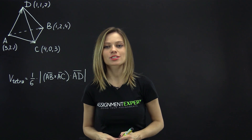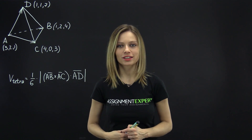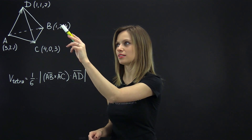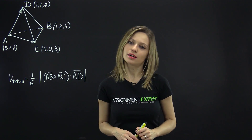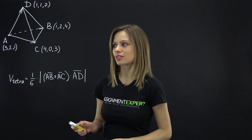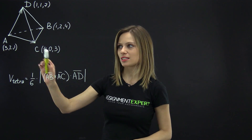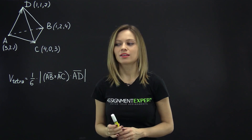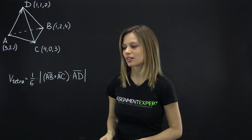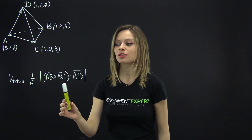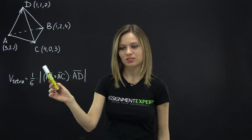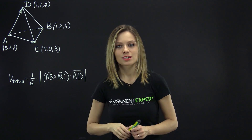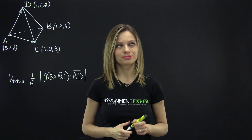As we remember, the vertices of our tetrahedron are the points A, B, C, and D. So we can say that it is built on the vectors AB, AC, and AD. Thus, its volume is calculated as one-sixth times the absolute value of the scalar triple product of these vectors. Let's find the coordinates of these vectors.